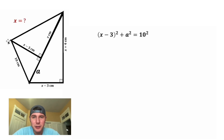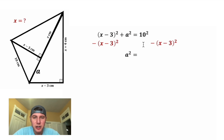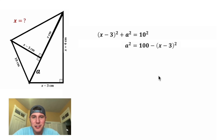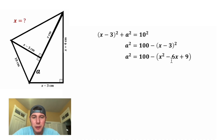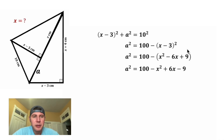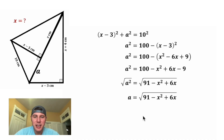x minus 3 squared plus a squared equals 10 squared. We're trying to solve for a, so I'm going to subtract (x minus 3) squared from both sides. On the left-hand side we'll just have a squared, and on the right-hand side we'll have 10 squared minus (x minus 3) squared, and 10 squared is equal to 100. Next, we expand (x minus 3) squared — that gives us x squared minus 6x plus 9 — then distribute the negative to get negative x squared plus 6x minus 9, and combine like terms. 100 minus 9 is 91, so after square rooting both sides, a equals the square root of 91 minus x squared plus 6x.